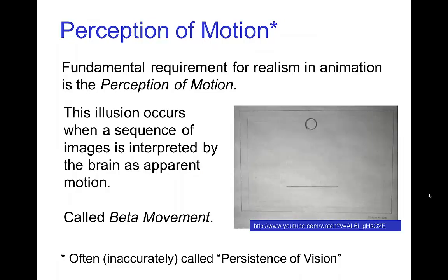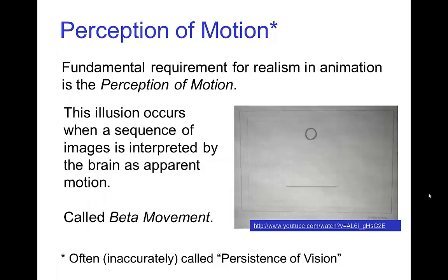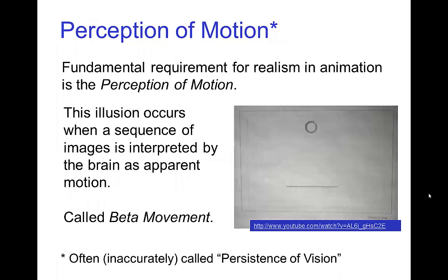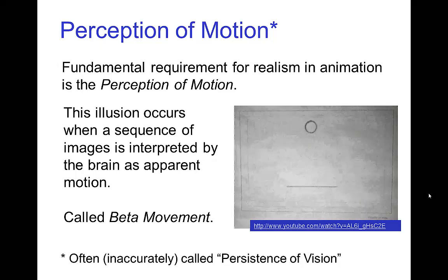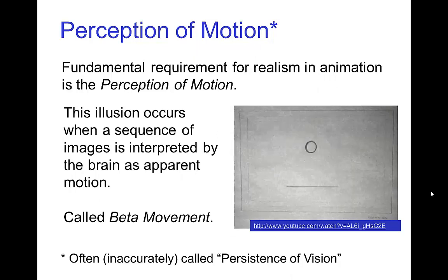This is interesting because there's a connection with the perception of motion. Perception of motion is the fundamental requirement for realism in animation. In animation, we're actually seeing a sequence of images, but the brain interprets these images as being motion — connecting the different images as, for example, a bouncing ball actually being a single ball moving through space. Sometimes this is called persistence of vision, but actually that's something different.